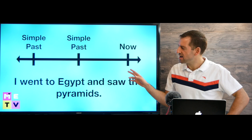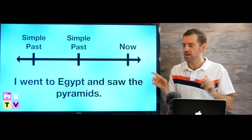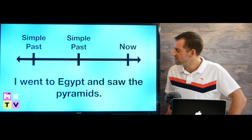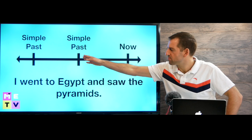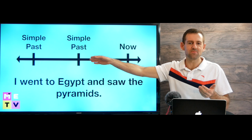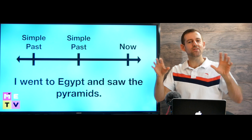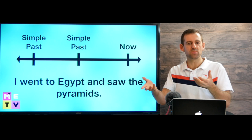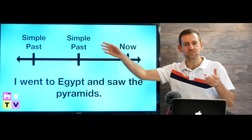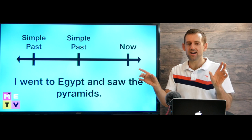If we just have two events in the past that are not really related to each other, we would just use two simple past tenses: 'I went to Egypt and saw the pyramids.' First you went to Egypt, then you saw the pyramids. They're not really linked — there are two separate events. You went to Egypt, you saw the pyramids, then you ate lunch, then you went somewhere else. It's just a list of events, so we use simple past for all of those. They're not dependent on each other.